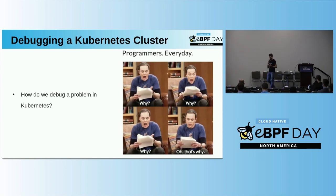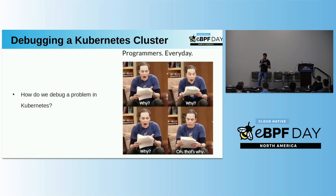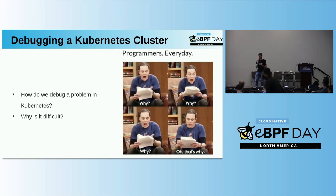We all know that debugging a Kubernetes cluster is not that easy. When something is wrong, the first thing we usually do is check if the pods are running — to see if any pod is crashing. We also check the logs of the pods. In some cases we don't have all the information we need and have to use other tools. Kubernetes is a distributed operating system, so our services are usually running on different nodes.